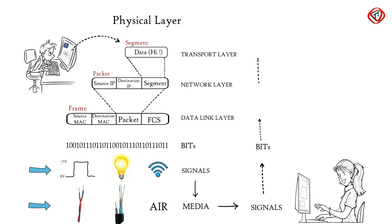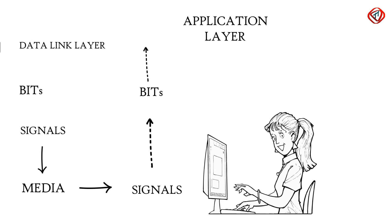Frame is further decapsulated as data moves through higher layers. Finally, data is moved to the application layer. Application layer protocol makes the sender's message visible in the application on the receiver's computer screen.